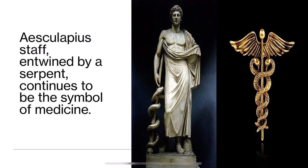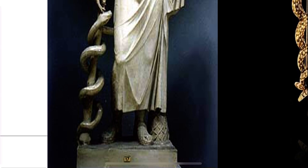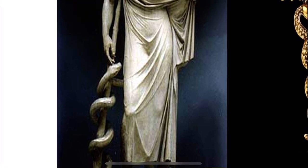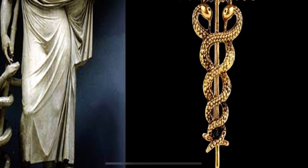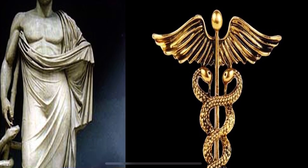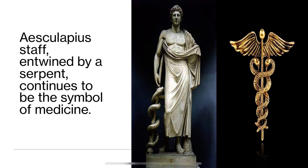They also speak about a symbol — a staff entwined by a serpent, which is the symbol of medicine. The story is that the god Mercury threw a rod during a fight between two snakes, and the snakes entangled around that rod belonging to Aesculapius. From then on, this rod of Aesculapius is considered the symbol of medicine.